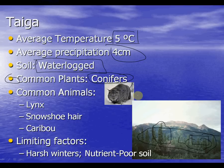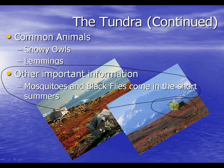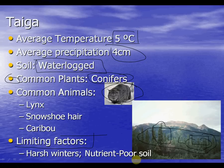The common animals in the taiga are the lynx, the snowshoe hare, and the caribou — we can see a caribou or elk in the image. The major limiting factors are the harsh winters and the nutrient-poor soil. You couldn't grow something that needs a lot of soil nutrients in the taiga — you can only grow things that survive both the harsh winters and the poor soil quality.